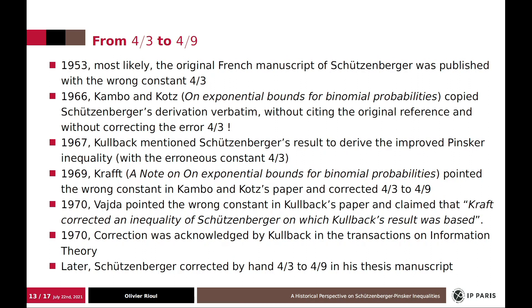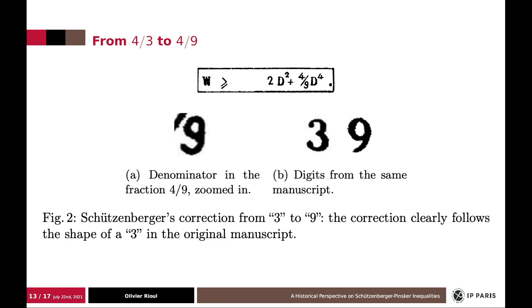And this was acknowledged by Kullback in the same year. And then later, Schützenberger apparently corrected his manuscript by hand from a three to a nine, because this is the nine that appears in his thesis. And actually, the three has this form, and he apparently corrected by hand with a pencil.